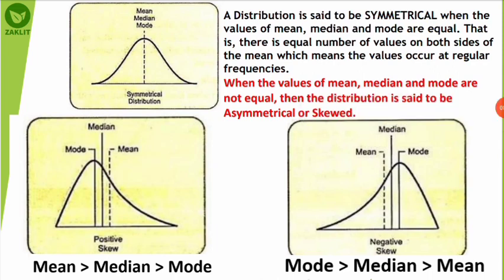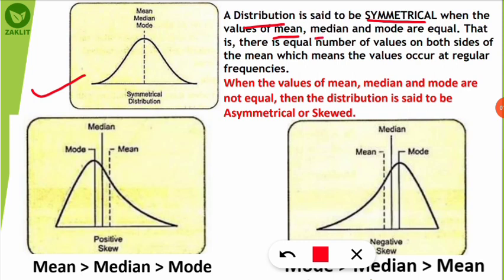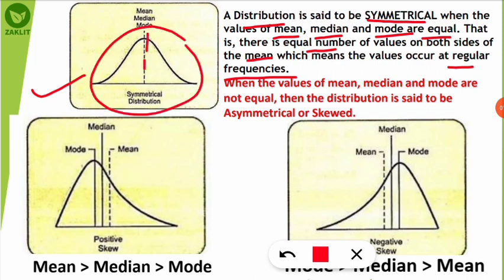When going for any statistical analysis, we make a distribution graph. A distribution is said to be symmetrical when the values of the mean, median, and mode are equal — meaning there is an equal number of values on both sides of the mean, so values occur at regular frequencies. In the graph, a single dotted line shows that mean, median, and mode are the same for this distribution. It will be bell-shaped, as you can see.